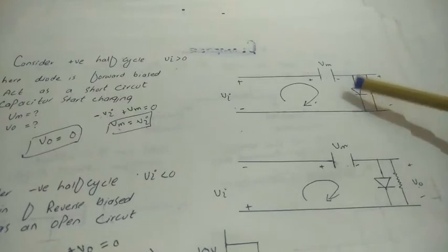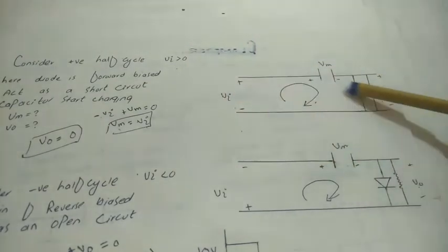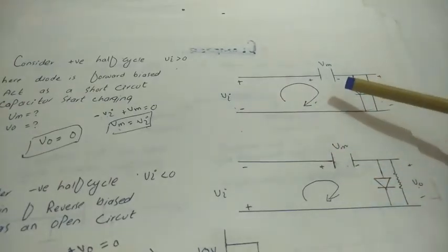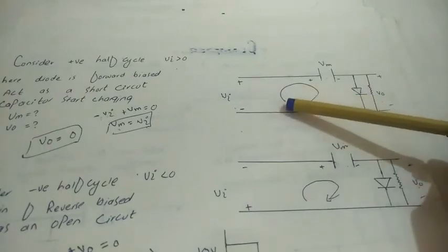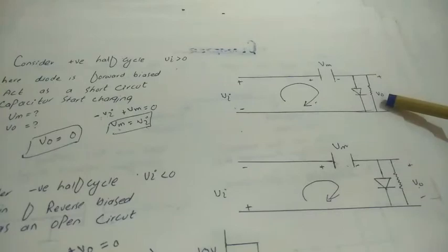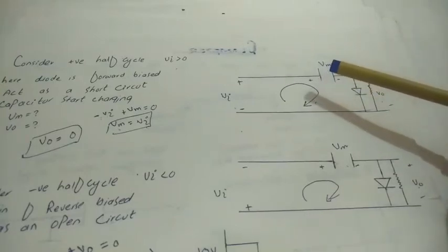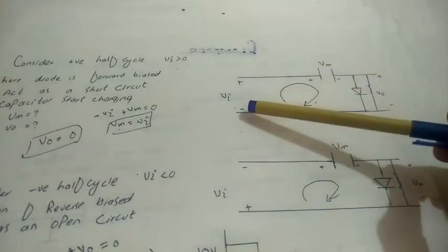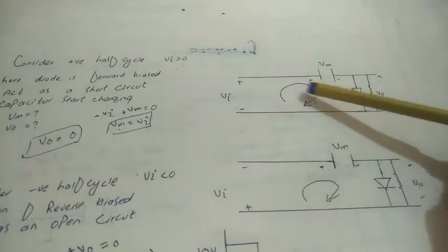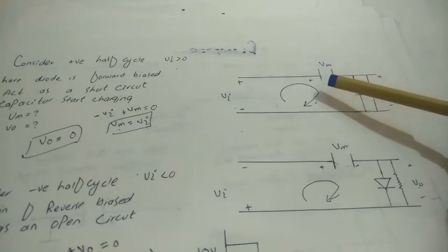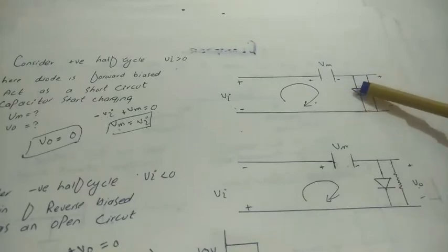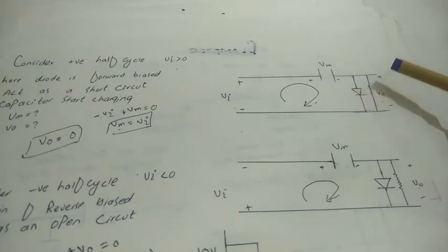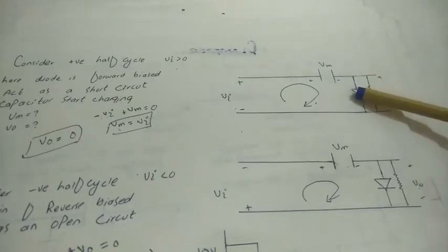Here we have a diode - the diode is forward biased during the positive half cycle. Because it is forward biased, current flows and the capacitor starts charging. The capacitor stores charge - it starts charging. The diode behaves as a short circuit, so it acts as a wire, and the output is zero. So in the positive half cycle, the output Vout is zero and the capacitor charges to Vm equal to Vi.